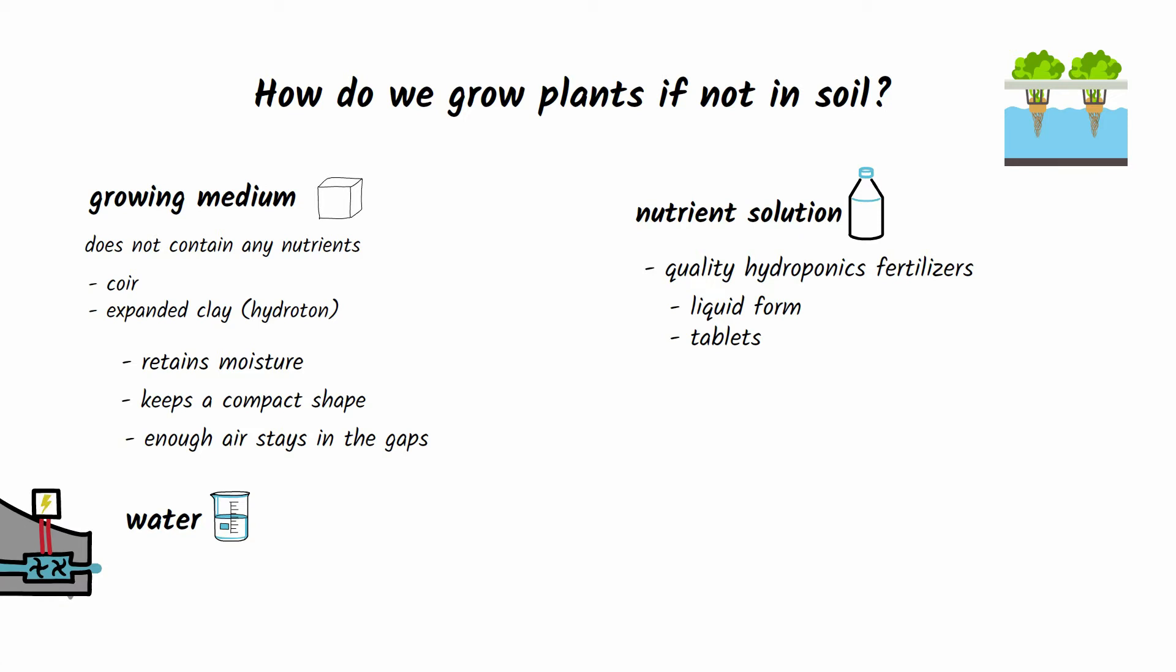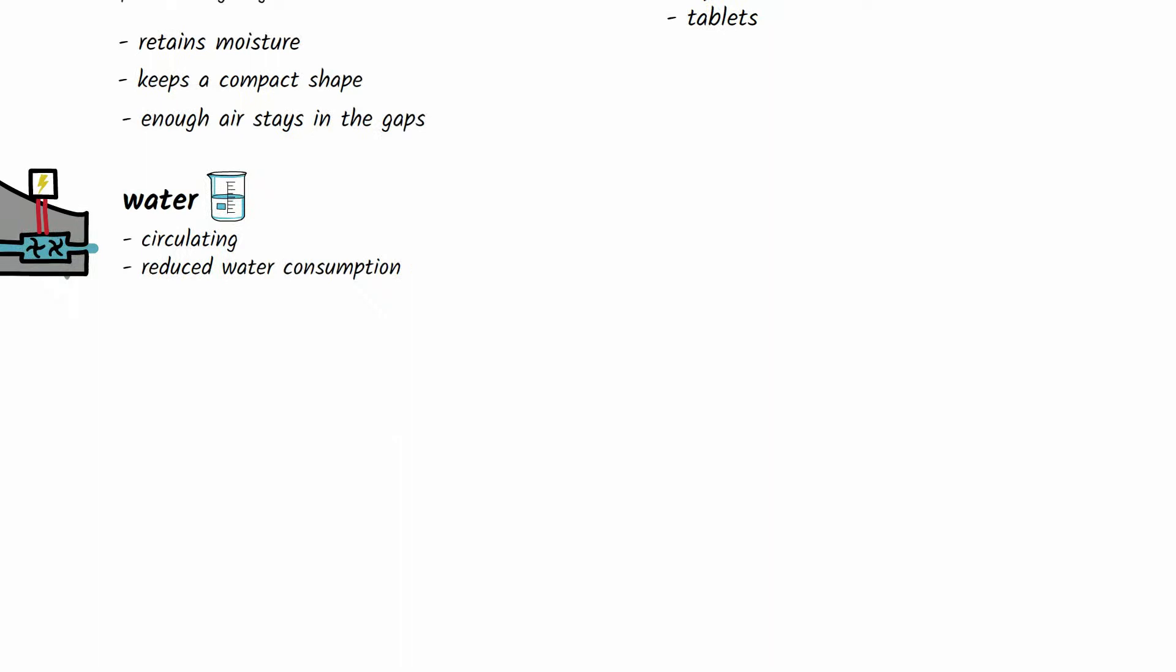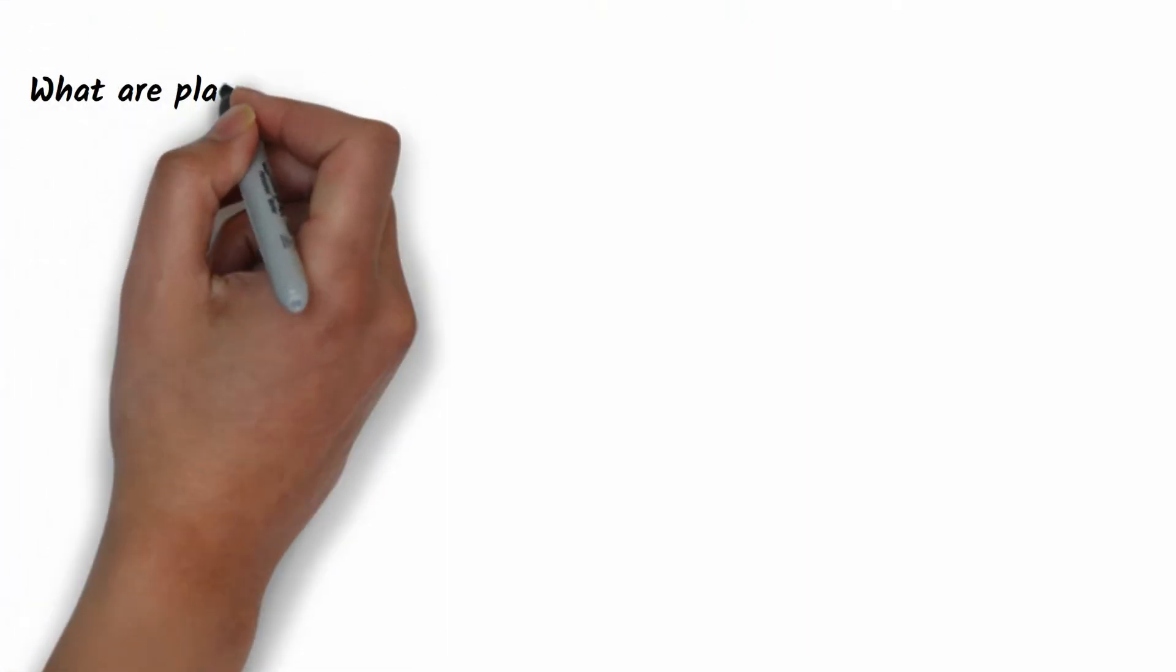In conventional cultivation, water in the soil continuously evaporates, meaning it needs to be constantly replenished. In contrast, in a hydroponic system water circulates, which reduces water consumption.